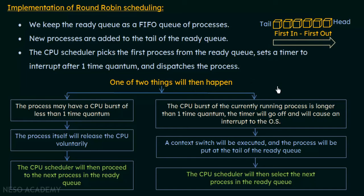Round robin is a very important scheduling algorithm, mostly used for time sharing systems, since time is shared between processes. We must be careful about choosing the time quantum. If we choose a very large time quantum, there are disadvantages. If we choose a very small time quantum, there will be too many context switches. Let's say the time quantum is 50 milliseconds.